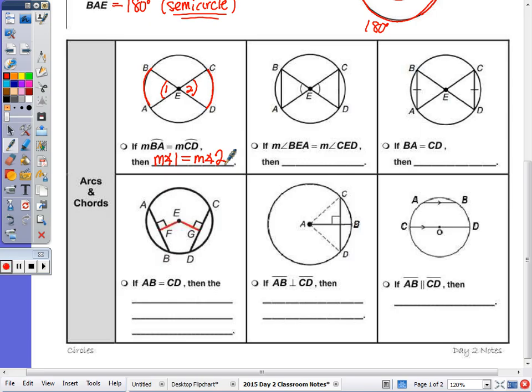Moving to the right, it says that if the measure of BEA, that angle is equal to the measure of CED, yes, I know that the respective arcs are congruent, but I can also state that these chords within those arcs are also congruent. So the length of BA is going to be equal to the length of CD, looking at the chords.